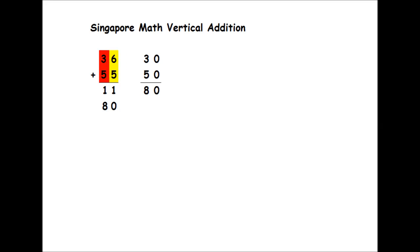It doesn't really matter because of the commutative property theory of addition, where it's always going to give you the same amount, regardless of which digit you use first. So I like to start with my ones column.